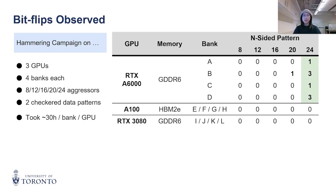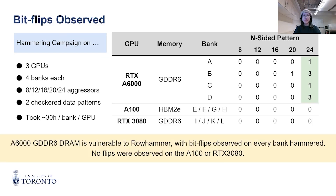The table here shows the number of bit flips we found. Our attacks succeeded on the A6000, on which we observed eight bit flips across all tested banks. The other two GPUs showed no bit flips. The lack of bit flips on these two could be due to differences in memory chips, higher row hammer thresholds, or unaddressed in-DRAM mitigations.